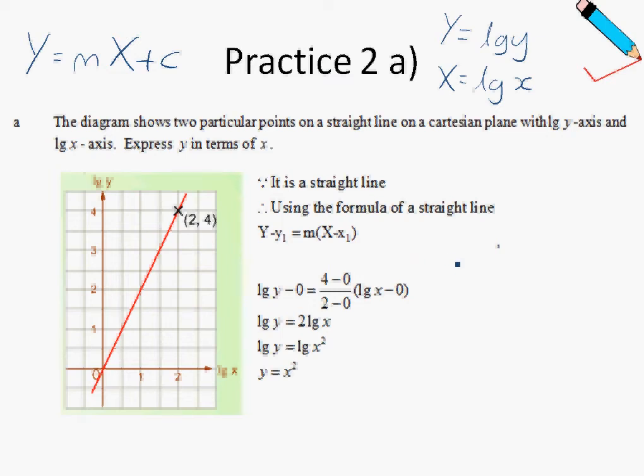So first and foremost, let me just do some side working. M, which is your gradient, can be found using these two points. Take note that there is another point here, just in case you didn't notice this, that the other point is just the point of origin, or 0, 0. So m will be 4 minus 0 over 2 minus 0, which is just 2.